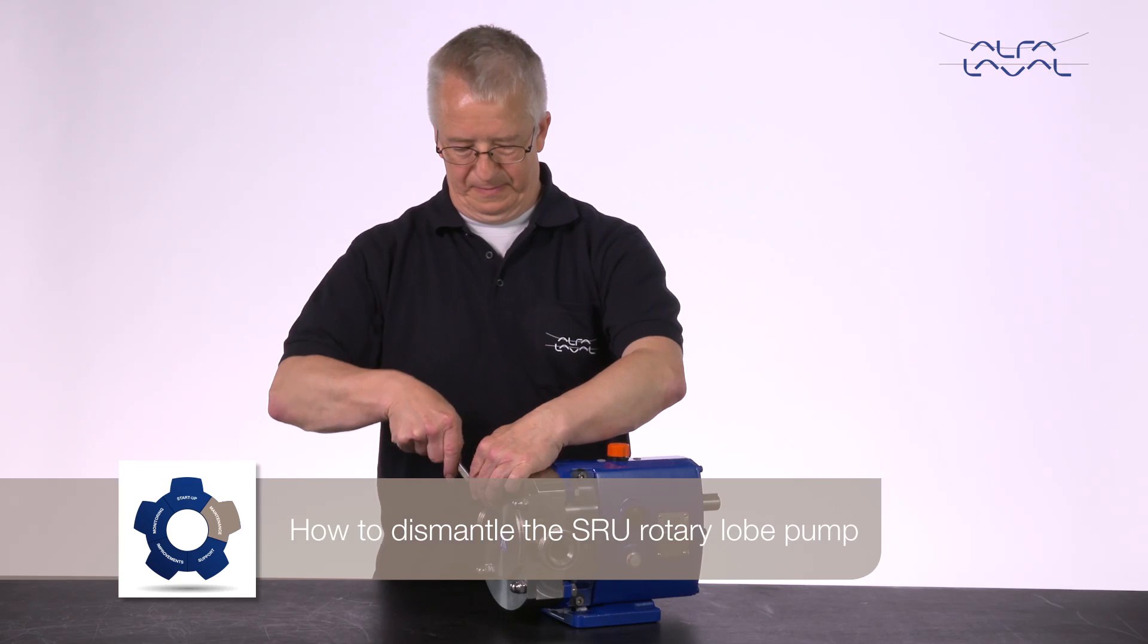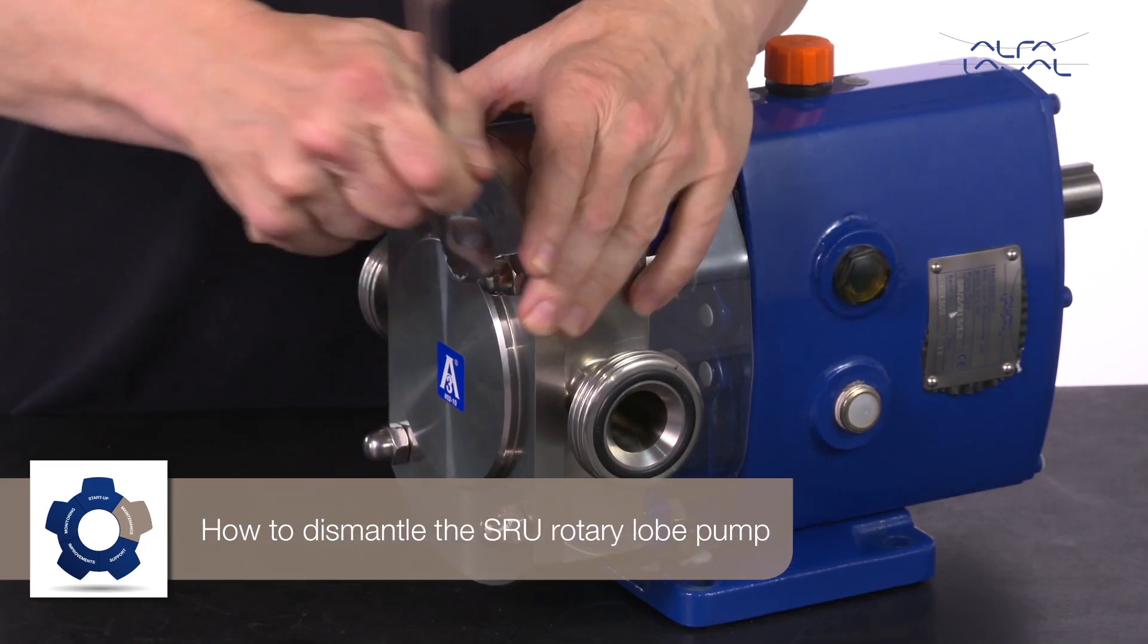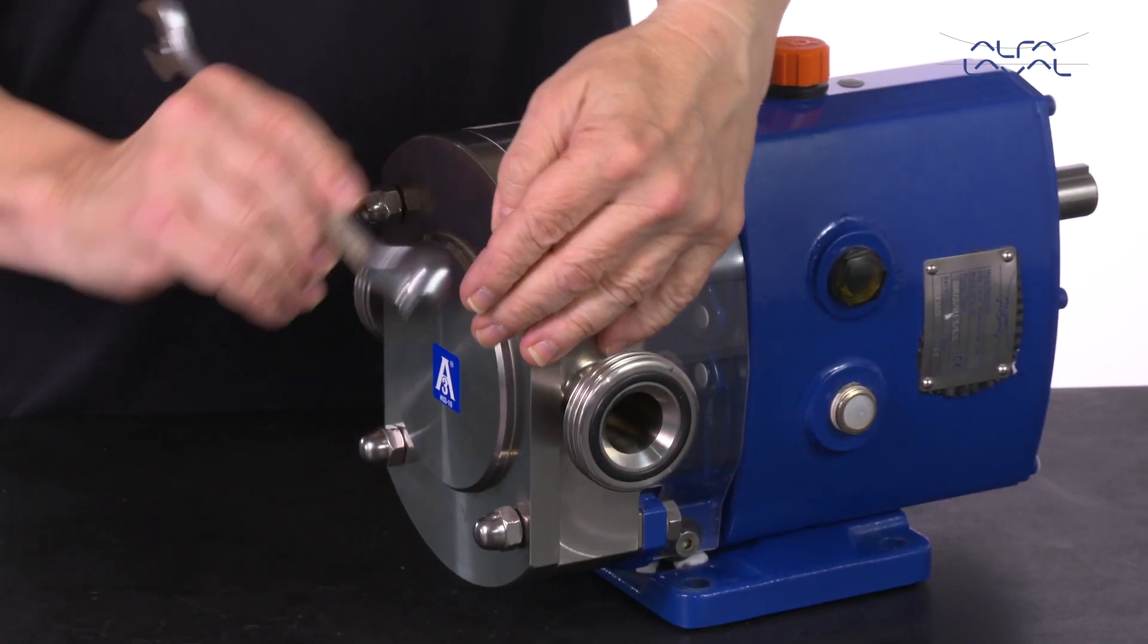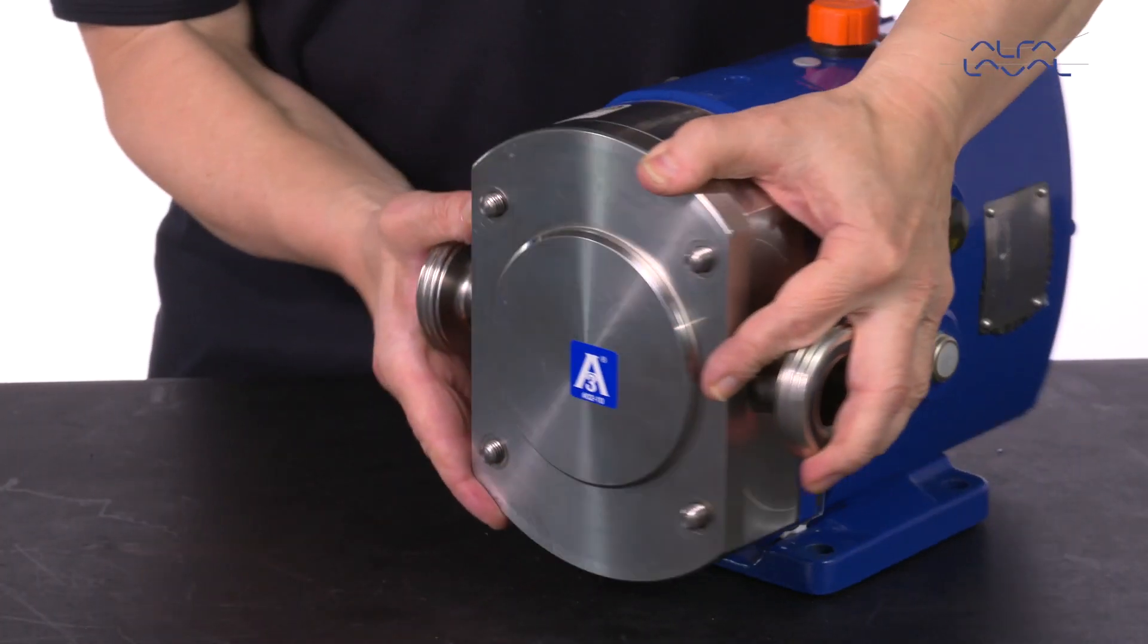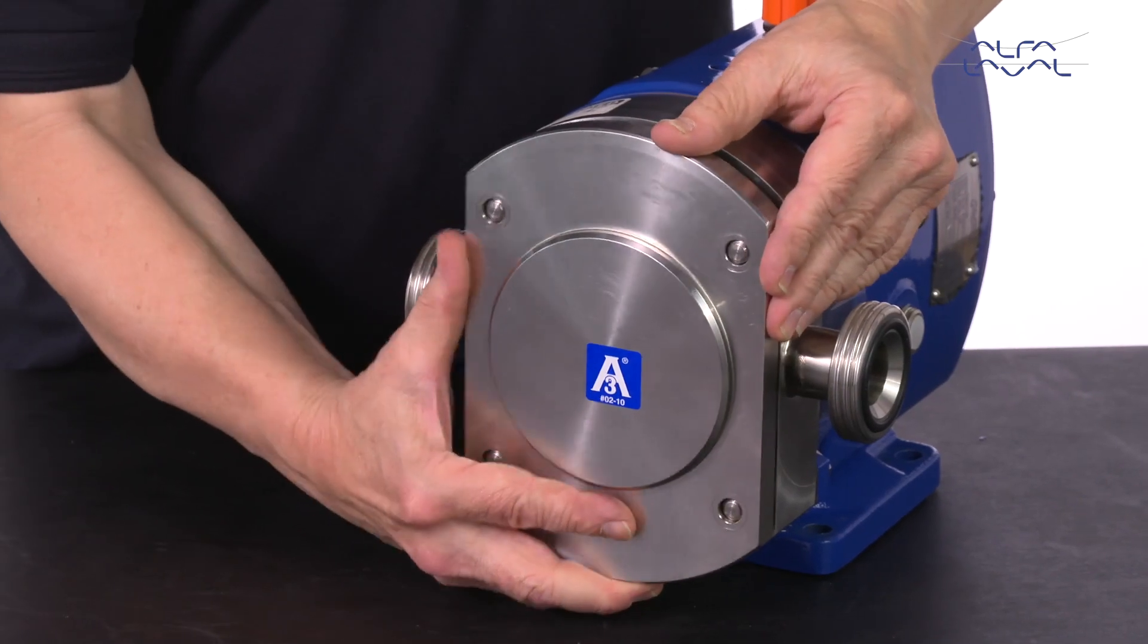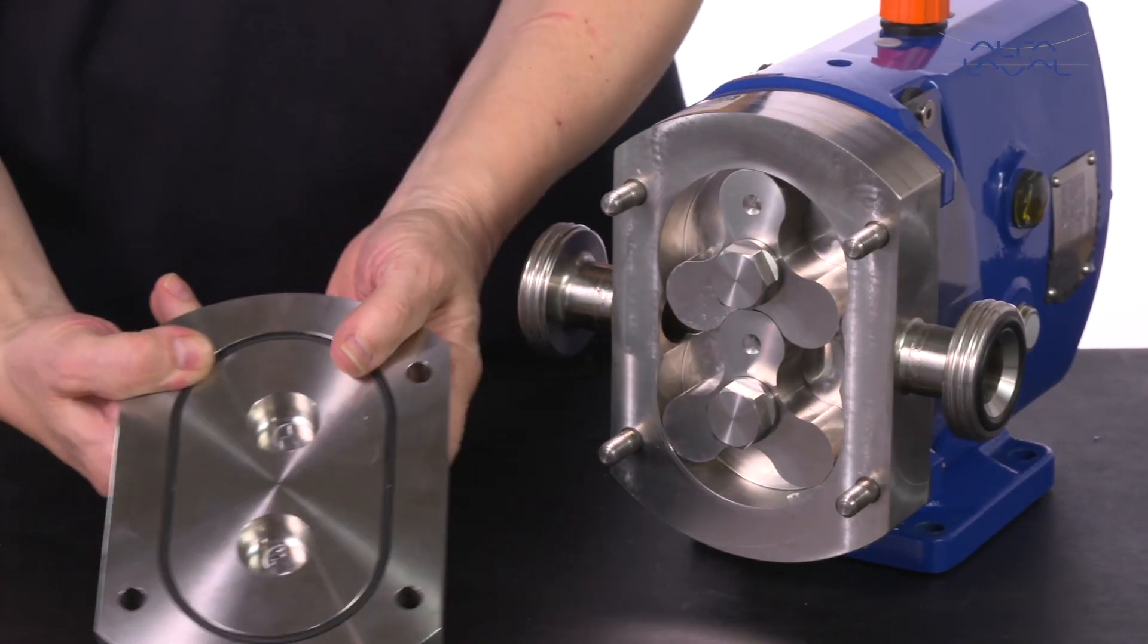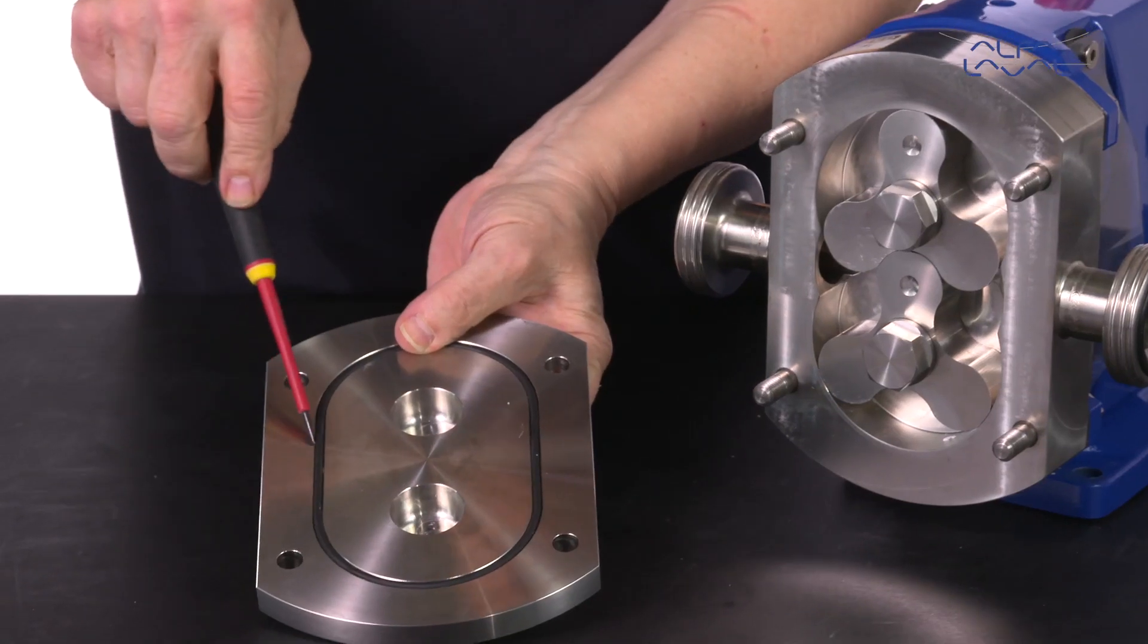How to dismantle the SRU rotary lobe pump. First, remove cover nuts on the rotor case and then remove the rotor case. Next, remove the O-ring on the rotor case.